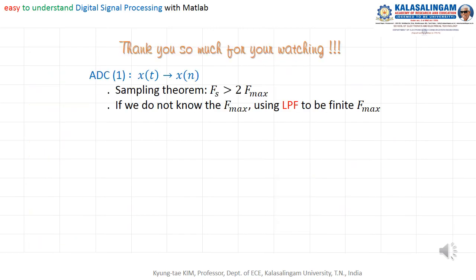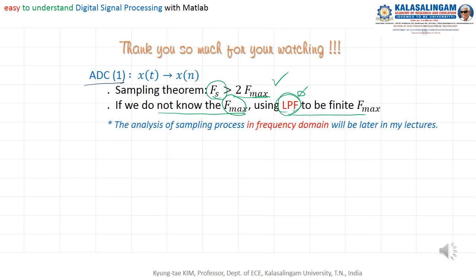Thank you so much for watching. Today I explained to you the first class of AD conversion — sampling theory. Sampling frequency must be greater than 2 times F-max. If we do not know F-max, we need a low-pass filter. The analysis of sampling theory in the frequency domain is also very important, but that will be covered later in the lecture after explaining the frequency concept.